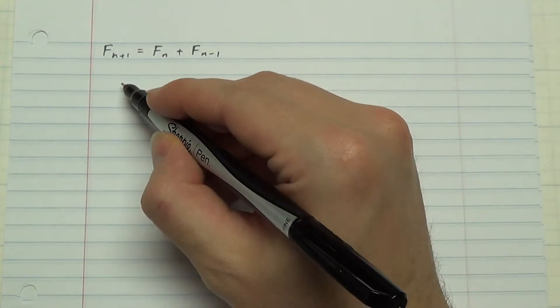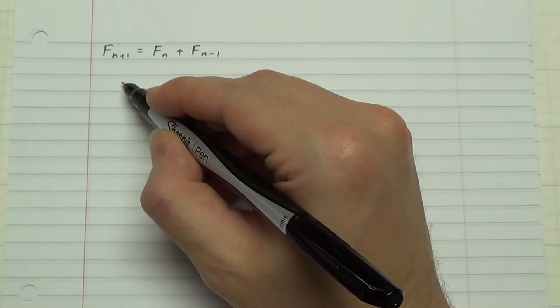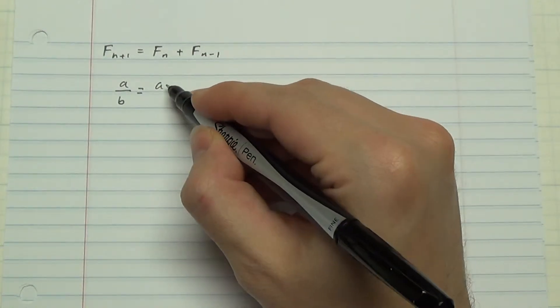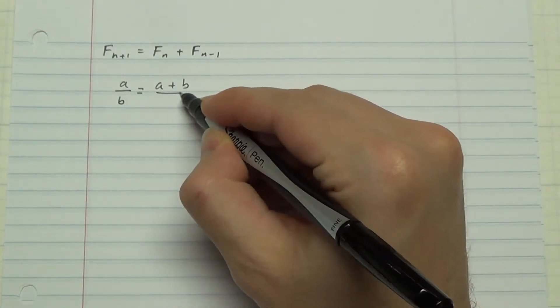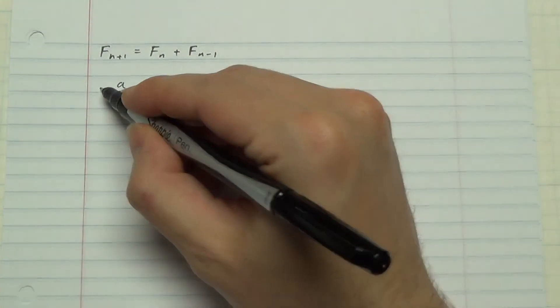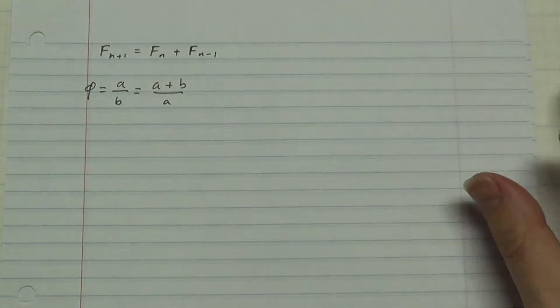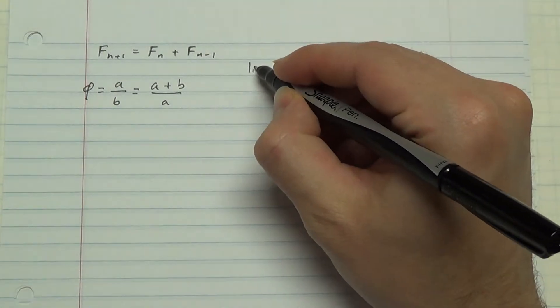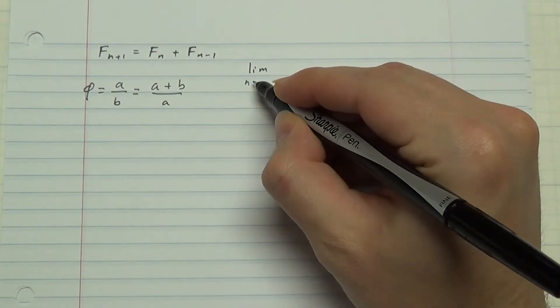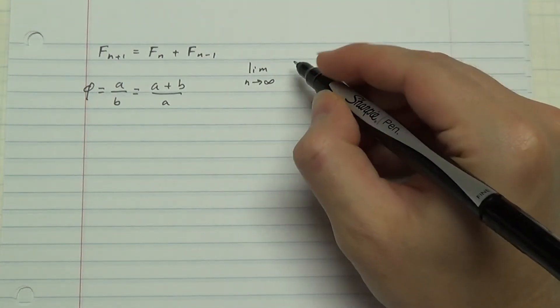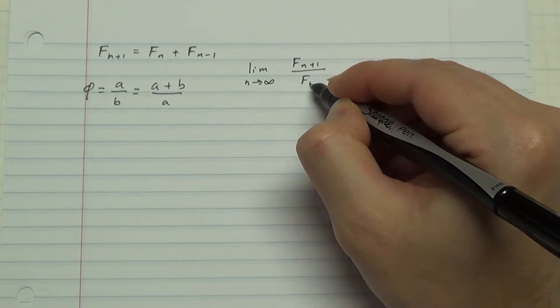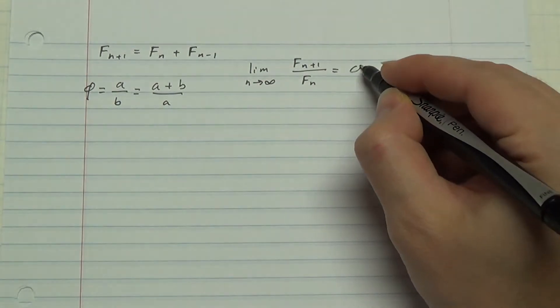And you may know about the golden ratio defined by a is to b as a plus b is to a, called phi, which is a lot cooler than pi. And you may even know the relationship between the two, that the limit of consecutive terms of the Fibonacci sequence is equal to the golden ratio.